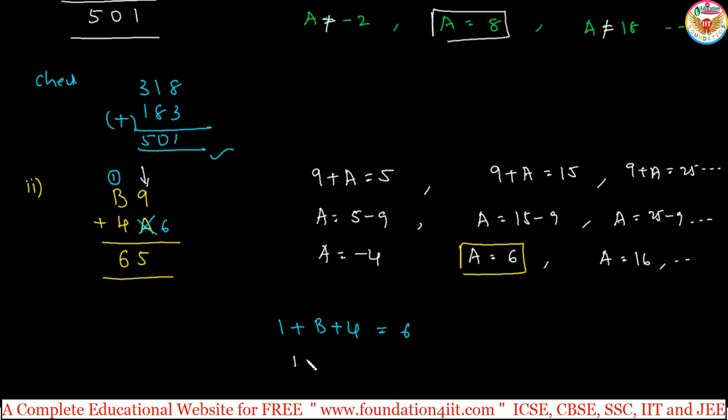From this, you can identify the next one. 1 plus 4, that is 5, 5 plus B is equal to 6, so from this, B should be 6 minus 5, that is 1. In the place of B, it must be 1. A is equal to 6 and B is equal to 1 satisfy this, that means 19 and 46 is exactly equal to 65.